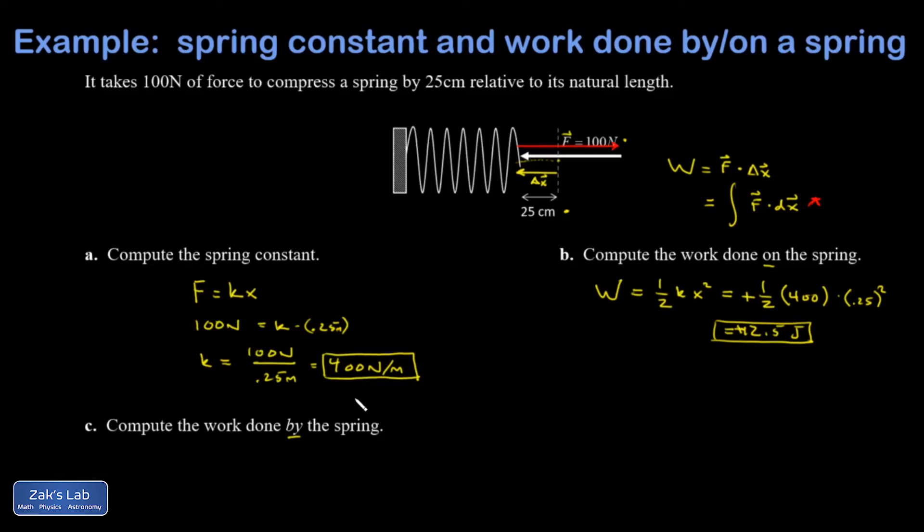Given that the force is always opposite to the direction of the displacement, every contribution to the work has to be negative. I'm going to get exactly the same magnitude, but with a minus sign up front. So in this case, work is negative 12.5 joules.